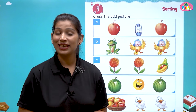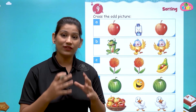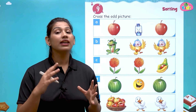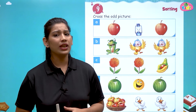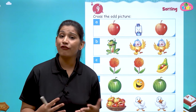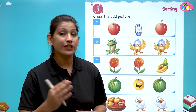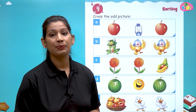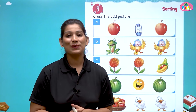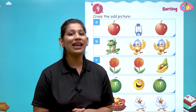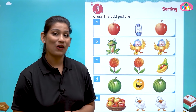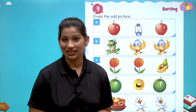You know the odd one out? We have a number of objects. In the number of objects, we have one thing that is different from the others — odd from the rest. We have to keep that out. This is also called sorting.